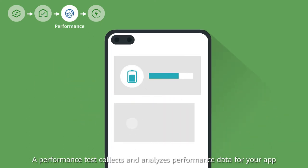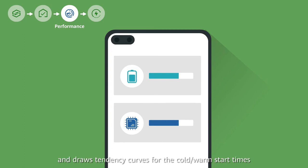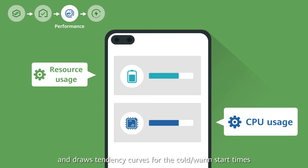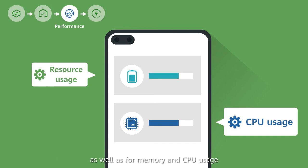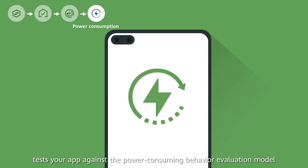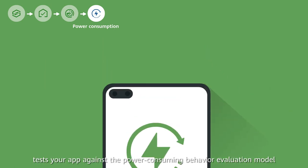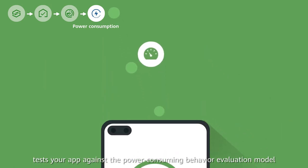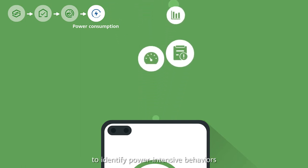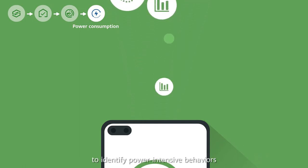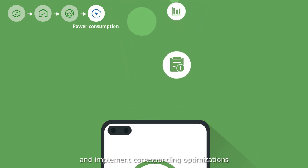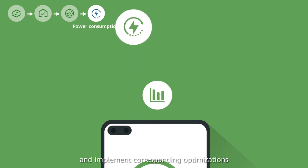A performance test collects and analyzes performance data for your app, and draws tendency curves for the cold and warm start times, frame rate, as well as memory and CPU usage. A power consumption test tests your app against the power consuming behavior evaluation model to identify power intensive behaviors and implement corresponding optimizations.